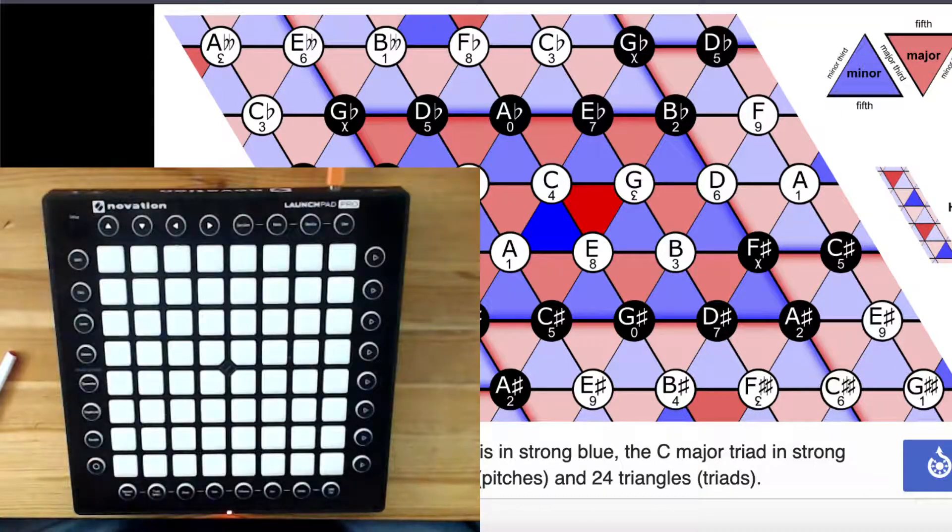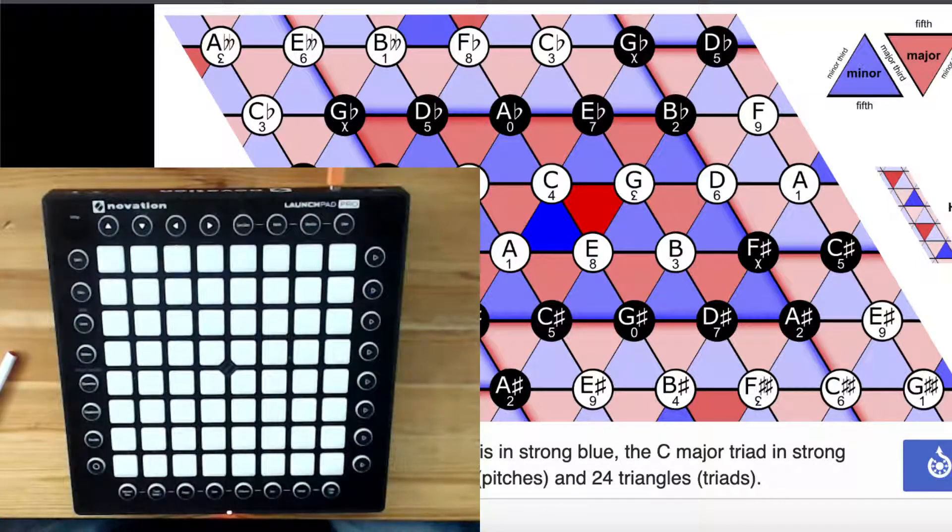So you can see that wherever I played that kind of triangle that was pointing down into the right, that would be one type of chord, and the triangle was pointing up and to the left, that'd be another type of chord.